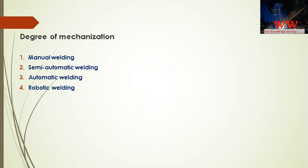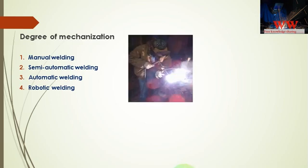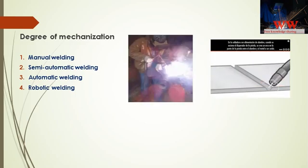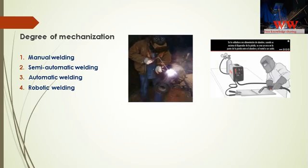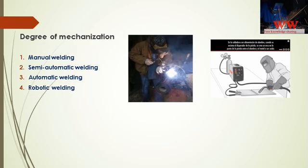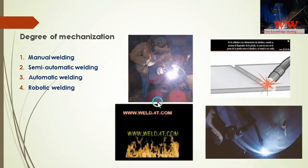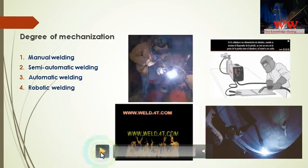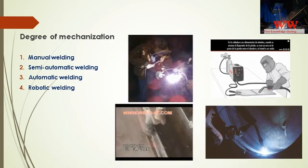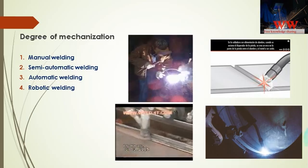Welding processes can also be classified based on the degree of mechanization as: manual welding, semi-automatic welding, automatic welding, and robotic welding. In manual welding, electrode movement, feeding, and workpiece are all controlled manually — such as in SMAW and TIG welding. TIG welding in the form of orbital TIG comes under automatic welding. In semi-automatic welding, torch and workpiece movement is manual while the electrode is fed automatically — for example in MIG welding. In automatic welding, electrode feed and torch movement are automatic while workpiece handling is manual. In robotic welding, all three parameters — electrode feed, torch movement, and workpiece — are controlled automatically, as in robotic welding stations.